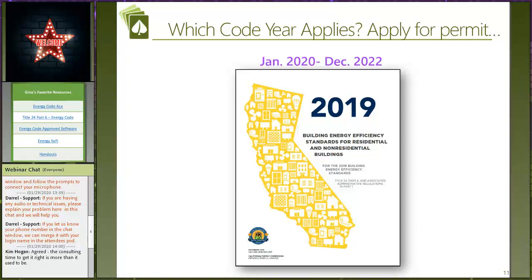We're talking about the 2019 code. Which projects must meet it? It's all based on your permit application date. If you applied for permits in the 2019 time period, you remain under the 2016 code. A project that had an infrastructure permit already submitted was still under 2016. Going forward, January 1, 2020 through December 31, 2022 — anything applying for permit in that window is under the 2019 code. The 2022 code arrives January 1, 2023.